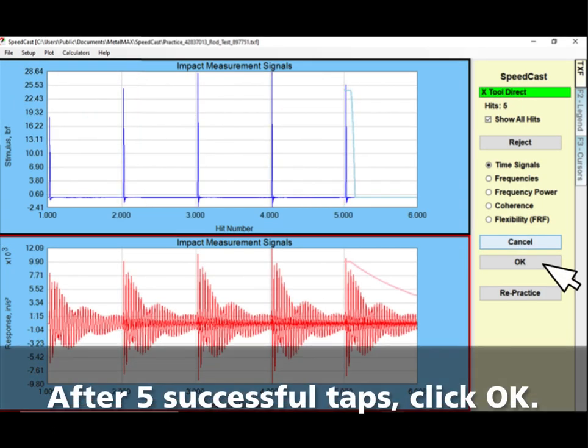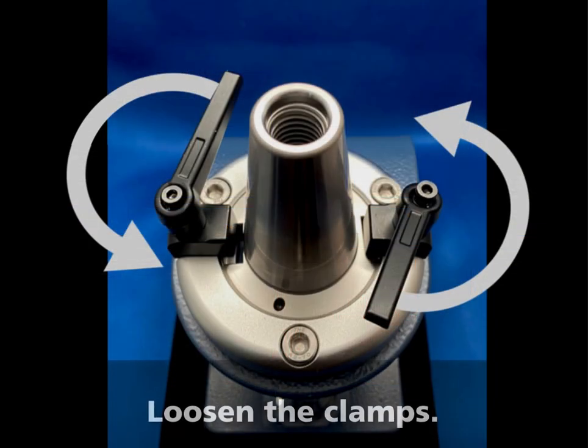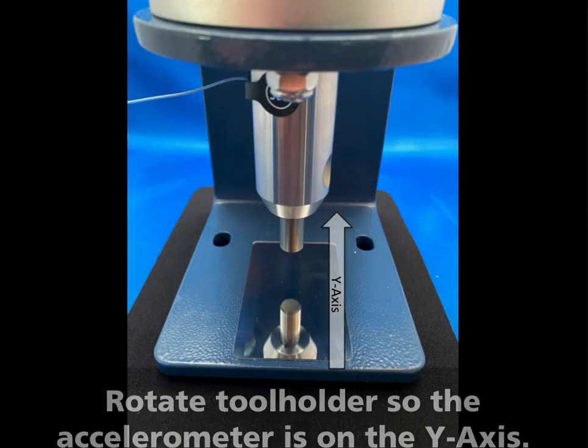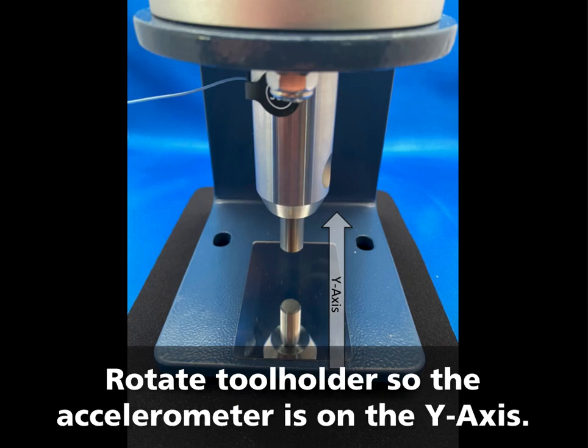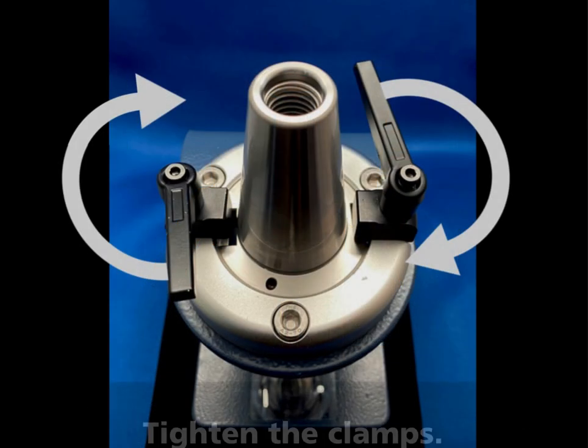After five successful taps, click OK. Loosen the clamps. Rotate the tool holder so the accelerometer is on the Y-axis. Tighten the clamps.